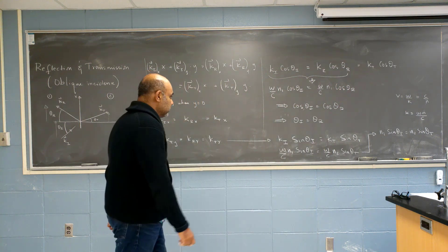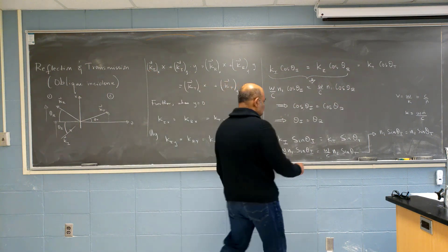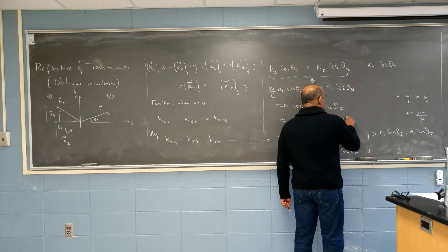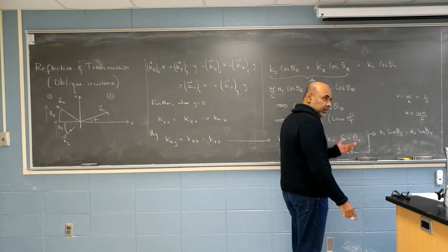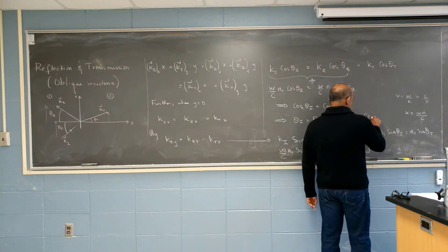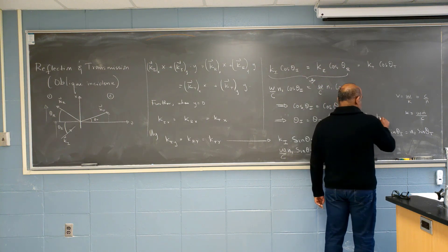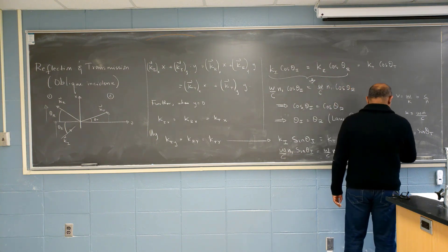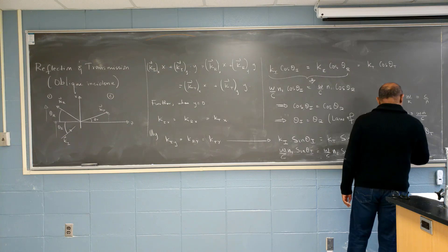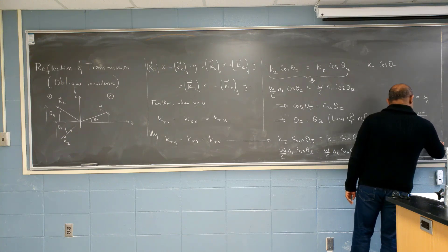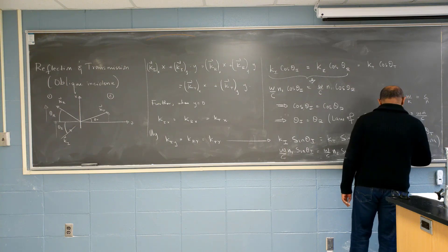I get omega over C times N1 sine theta I equals omega over C times N2 sine theta T. And this implies N1 sine theta I equals N2 sine theta T. We know this one. This is, of course, the law of reflection — it's not really a law anymore, right? It's been derived. And this is the law of refraction. There's a name for it. What is it? Snell's law.